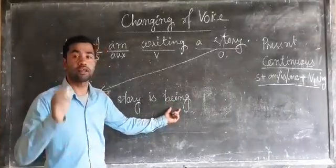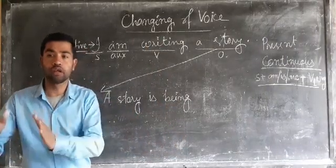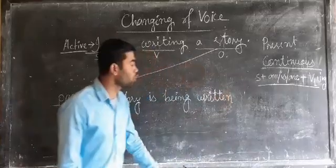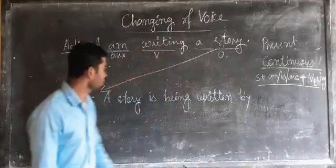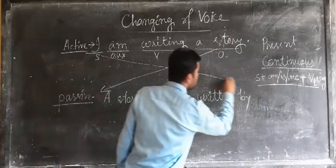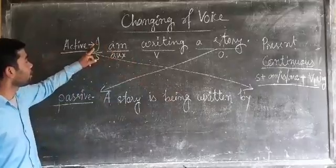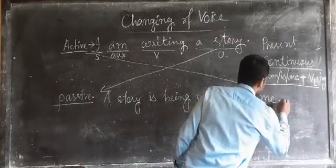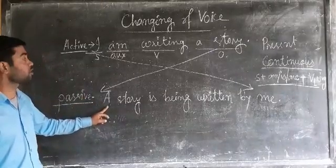'A story is being written.' We converted the first form of the verb to the third form — 'written.' Thereafter we need the preposition 'by.' So: 'A story is being written by...' Now, the subject of active voice will become the object of passive voice. 'I' was the subject; in the object position it becomes 'me.' So the complete passive sentence is: 'A story is being written by me.'